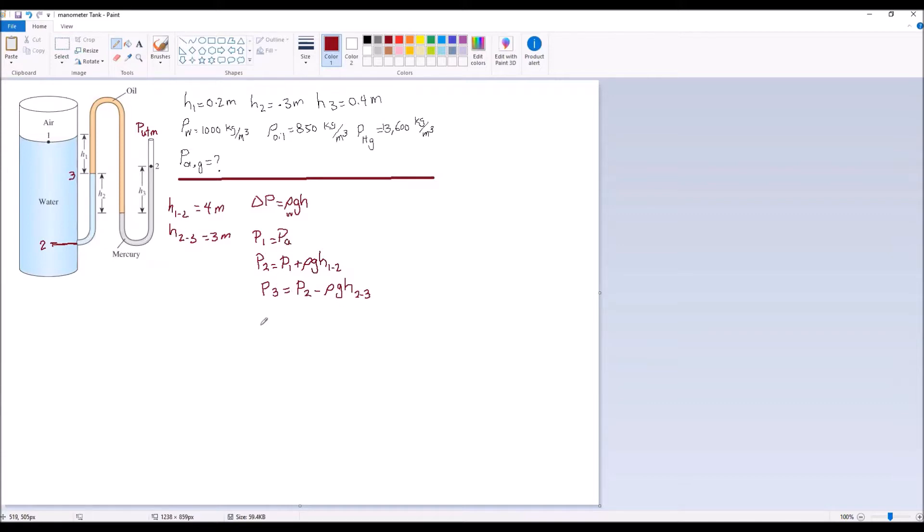So let's combine these two. So P3 is P2, and P2 is P1 plus rho GH 1 to 2. That's this part, then minus rho GH 2 to 3.